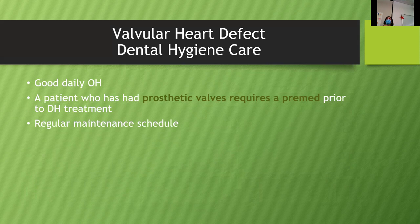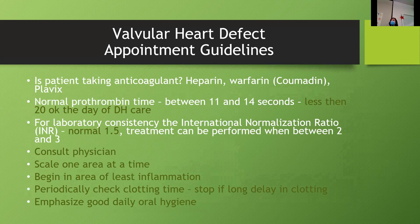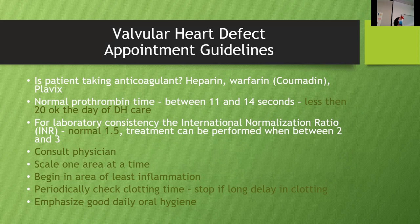The patient who has had a prosthetic valve requires pre-med prior to dental hygiene — that's one of your biggest red flags. For appointment guidelines: is the patient taking anticoagulants like heparin, warfarin, Coumadin, Plavix? These are blood thinners. Normal prothrombin time is between 11 and 14 seconds. If they're less than 20 the day of their dental hygiene care, that's okay to proceed. Normal INR — international normalization ratio — is 1.5 and treatment can be performed between two and three.